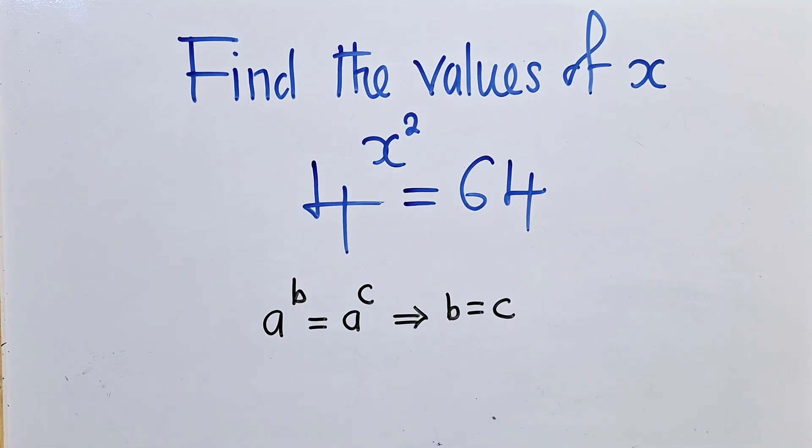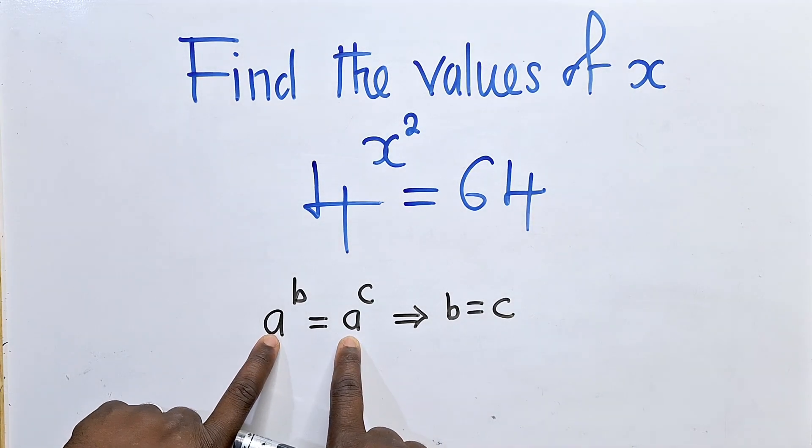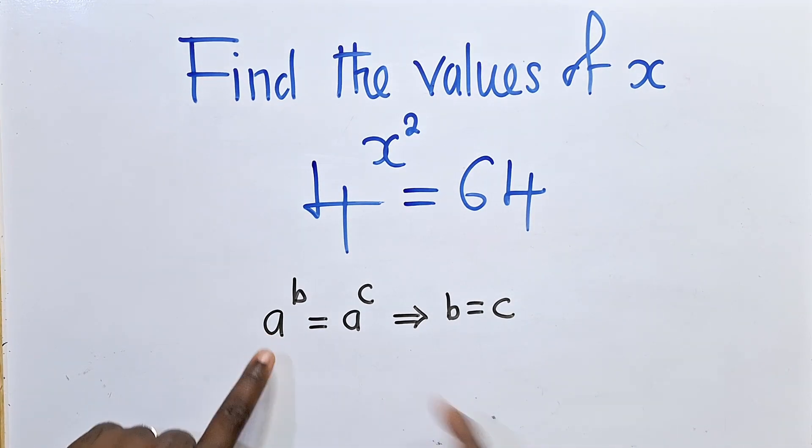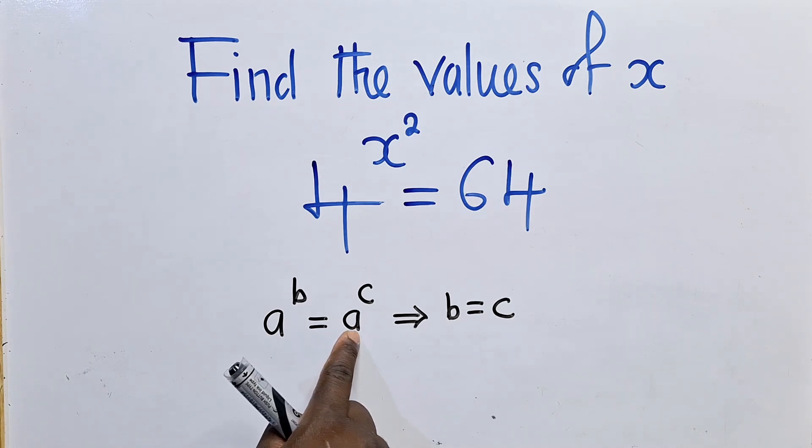So what are we trying to say here? We're trying to say that when the bases, this is a base and this is a base, when they are equal to each other, this is a equal to a, meaning the powers, regardless of how they look, they are equal to each other.